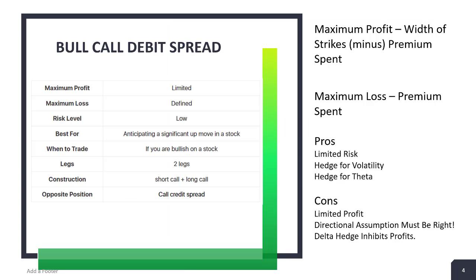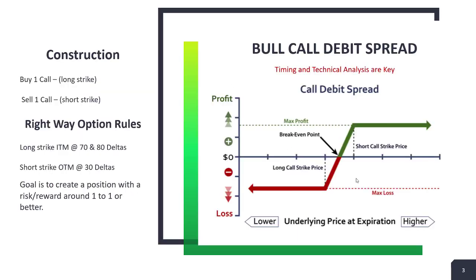The bull call debit spread has limited profit and defined risk — we know what the risk is when we go into the trade. It's a more conservative trade than a straight directional call because we put limiting factors in it. You want to use it when you're anticipating a significant move up in the stock. You need to be very bullish, it requires two legs, and the opposite position would be a call credit spread, which creates basically that exact same profile on the profit diagram.